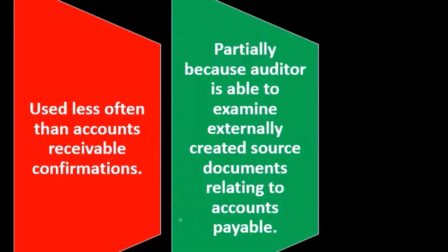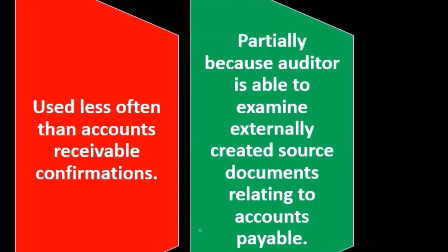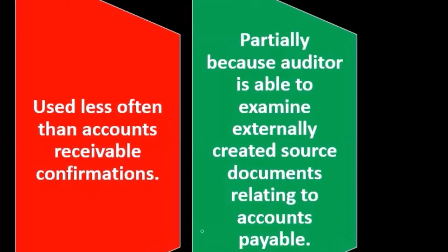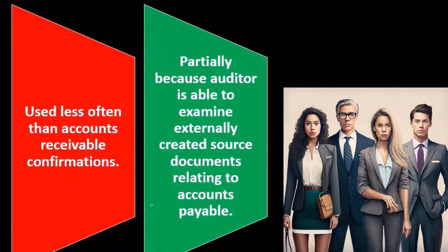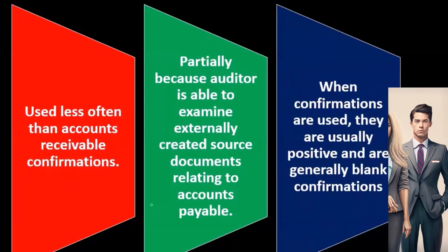Notice that with accounts payable, we have other types of source documents that are not generated from inside the organization. When we're looking at what generated the accounts payable, source documents generated by the company — such as an internal invoice — are less reliable. With accounts payable, we're looking at bills given from outside the organization, and therefore they are more reliable, meaning we can rely less on confirmations.